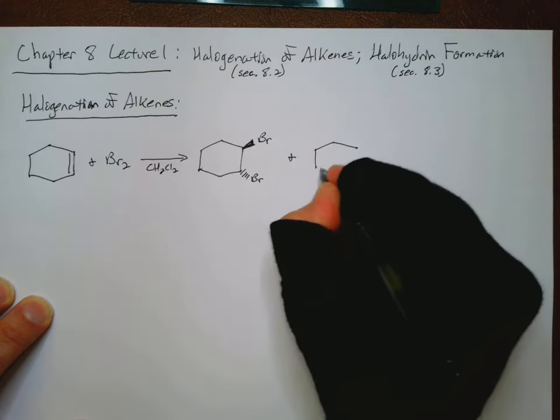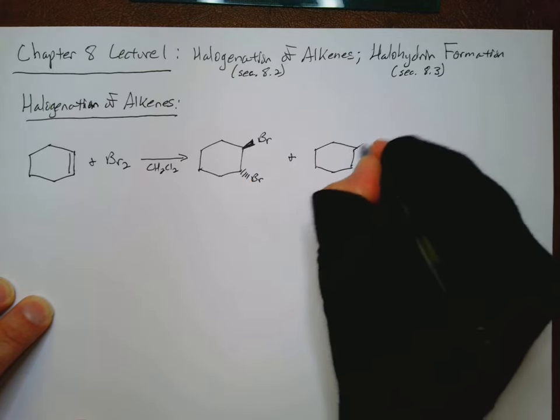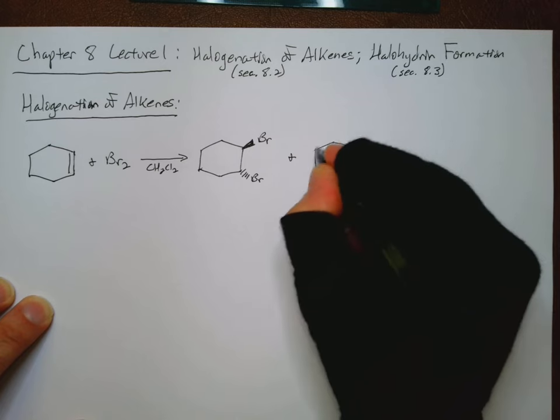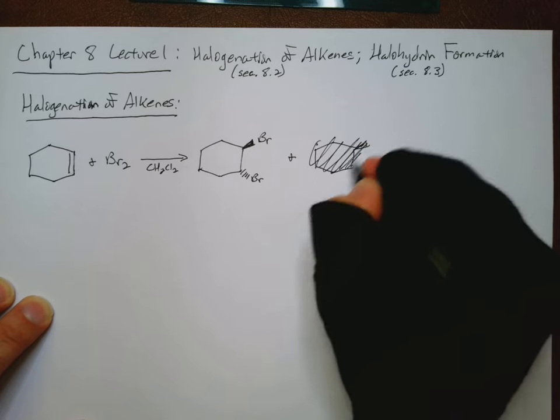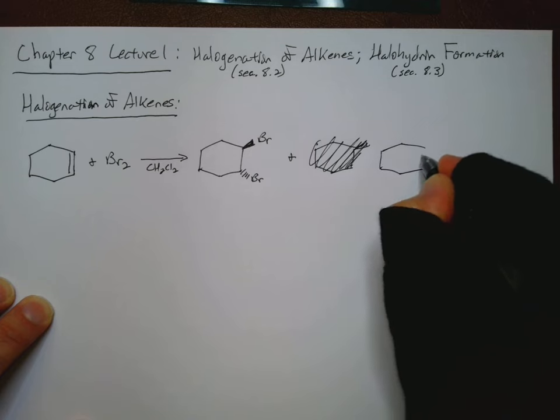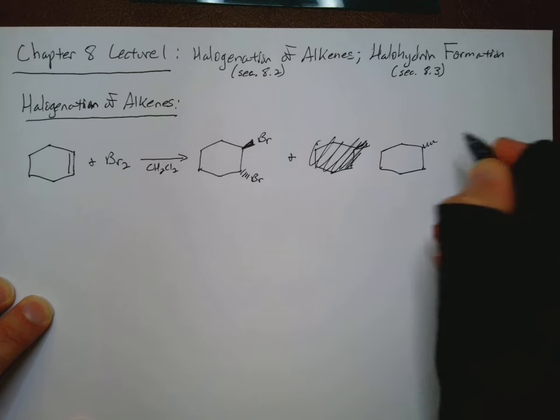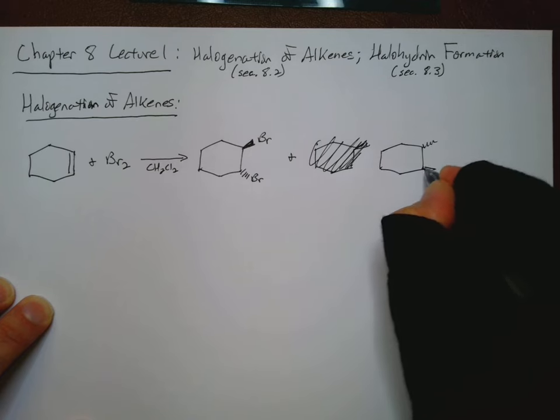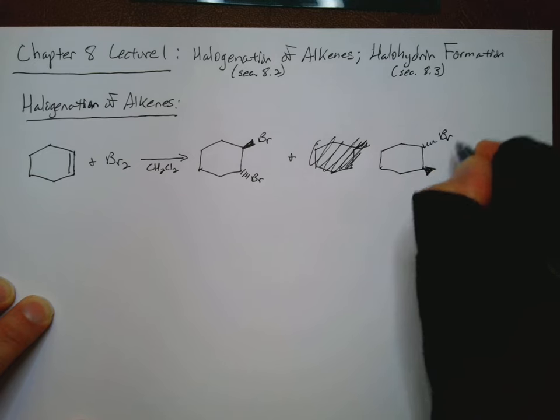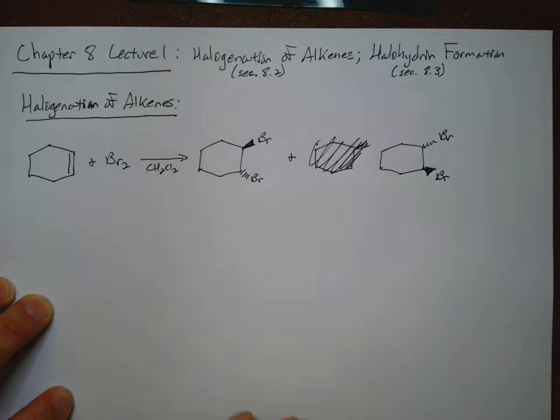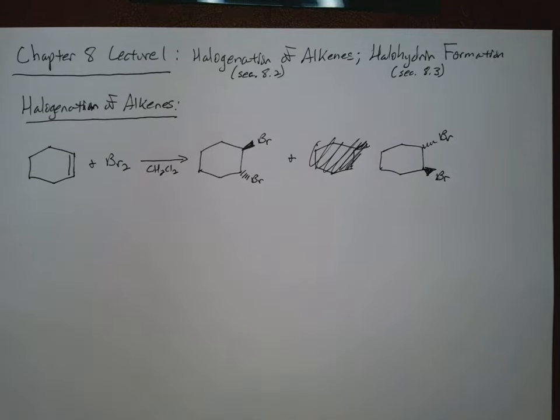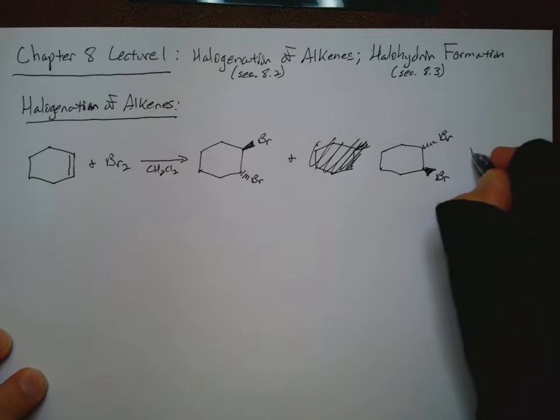And what we end up getting is interesting, because we get a pair, in this case, a pair of products that are enantiomers. So Br and Br. And this is rapid.